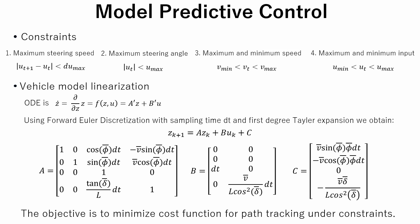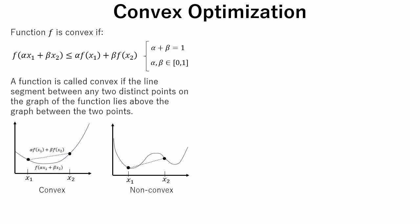Using the above equations, we will minimize cost function for path tracking under constraints. We will use convex optimization to solve this problem. A function is called convex if the line segment between any two distinct points on the graph of the function lies above the graph between the two points. In the right image, the function is not convex, since line segment lies under the graph. For a convex problem, any local optimum must be a global optimum.